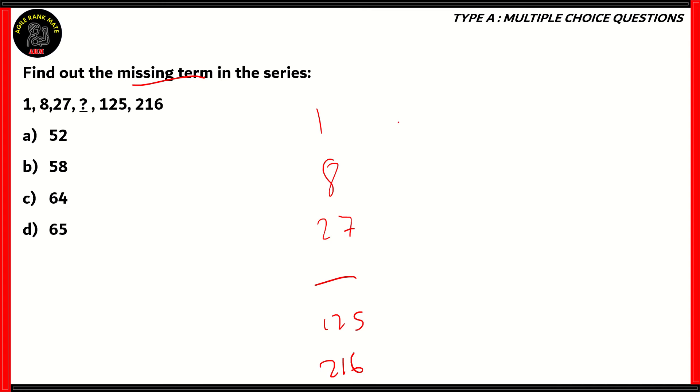You notice that 8 is the same thing as 2 cubed, 27 is 3 cubed, 125 is 5 cubed, and 216 is 6 cubed. So that means 1 also stands out as 1 cubed. So the number we have to find is between 3 cubed and 5 cubed. Logically, the next step after 3 cubed is 4 cubed. So the question mark denotes 4 cubed, which is 4 times 4 times 4. 4 squared is 16 times 4, which equals 64. So therefore option C, 64 is the right answer.